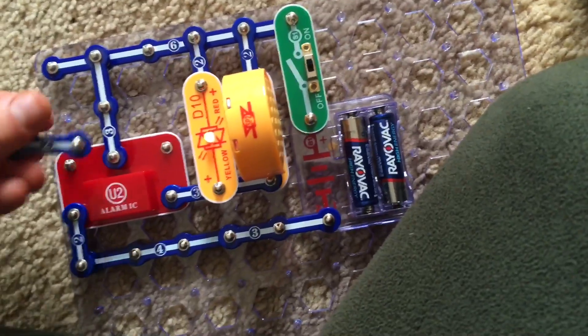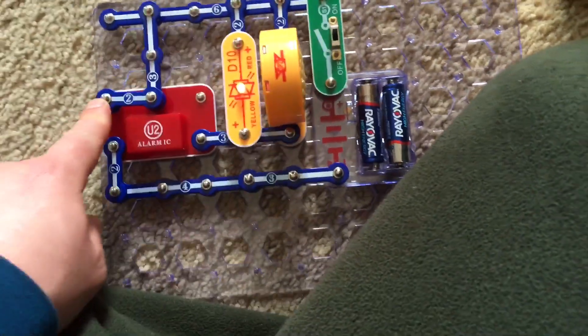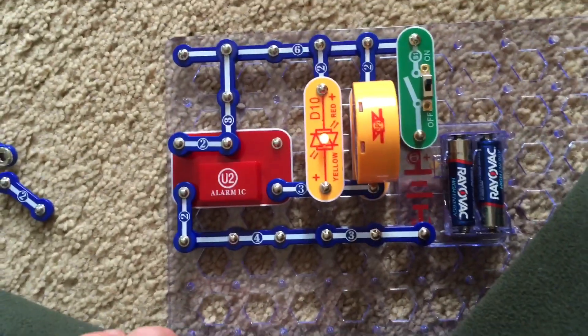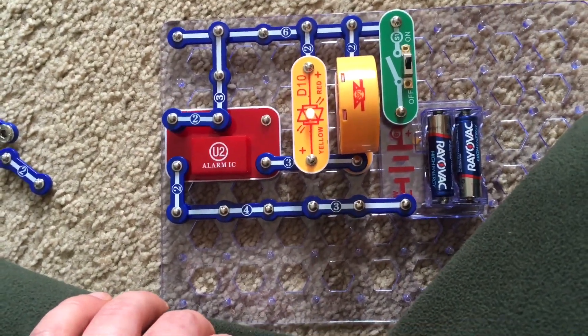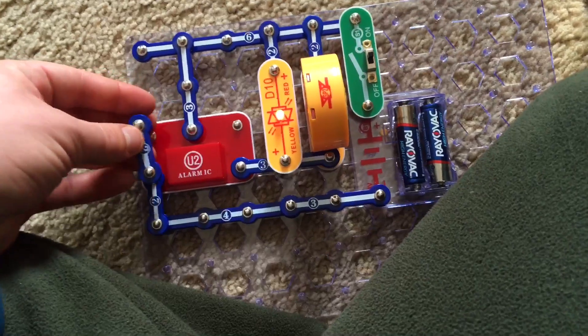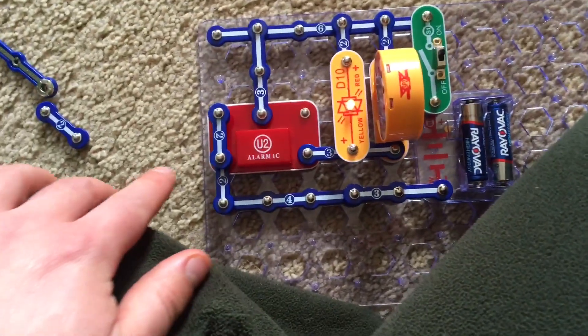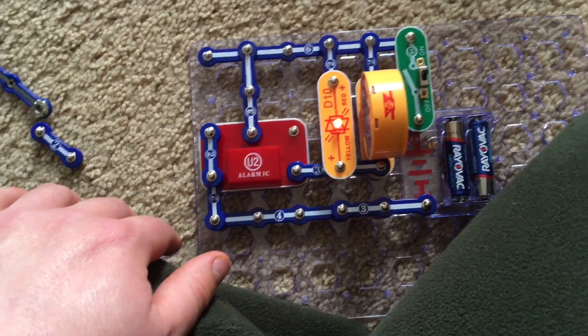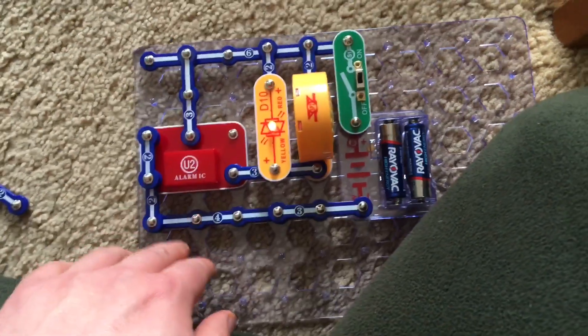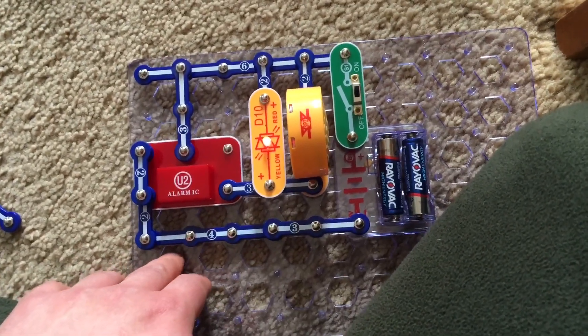When I remove the connection between D and E and then add a connection between points B and D the siren now sounds like a fire engine. Lastly when I move the connection so that it is between points B and F the siren sounds like a European siren or an ambulance siren you could say.